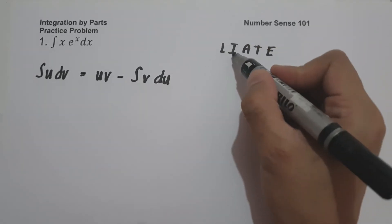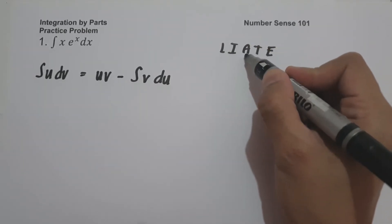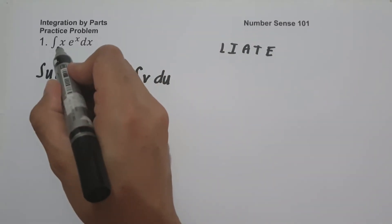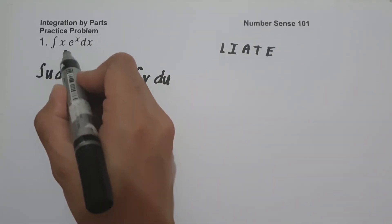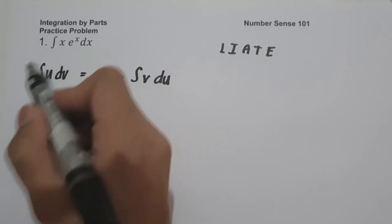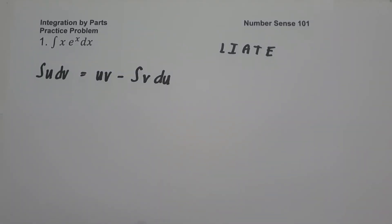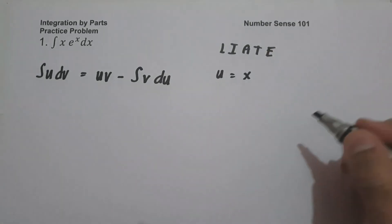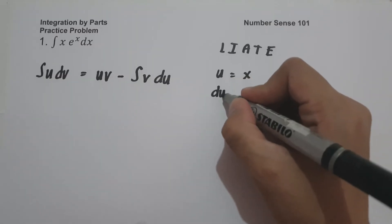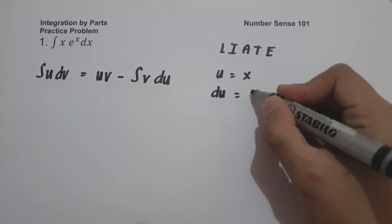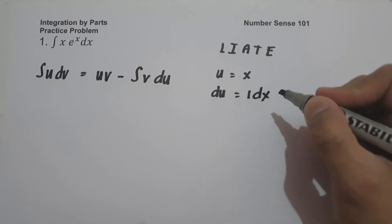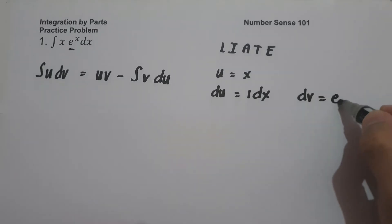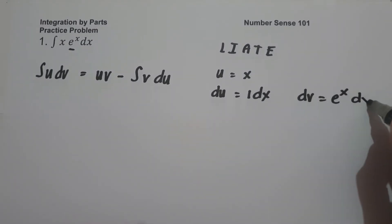LIATE stands for log, inverse trigonometry, algebra, trigonometry, and exponent. Since in our given, x is an example of algebra and e raised to x is an example of exponent, and algebra comes first before exponent, therefore the value of u is x. And du, the derivative of x, is 1 dx. And dv is e raised to x dx.